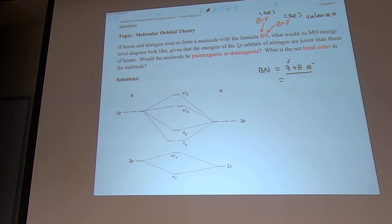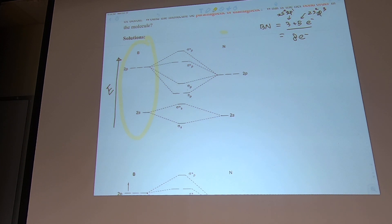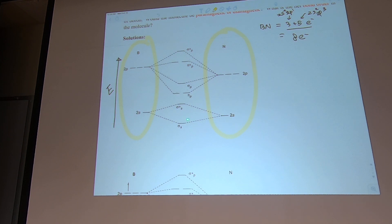So we have 5 electrons from the 2s and 2p orbitals, giving us 8 electrons total. In any exam, they provide you this energy diagram — energy increases from lower to upper. On both sides are the atomic levels: S orbital and P orbital. When you bring the S orbitals together, you get one orbital at lower energy and one at higher energy.